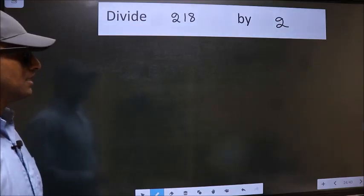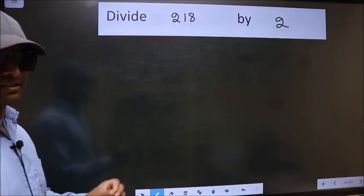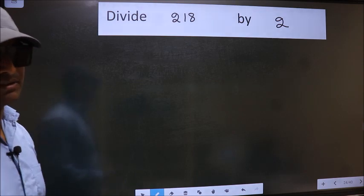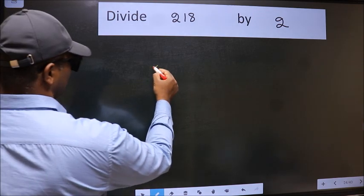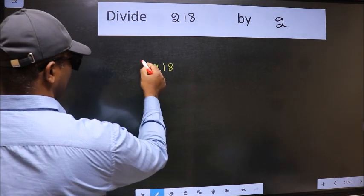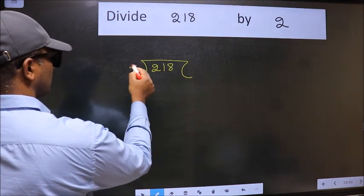Divide 218 by 2. To divide this, we should frame it in this way. 218 and 2 here.